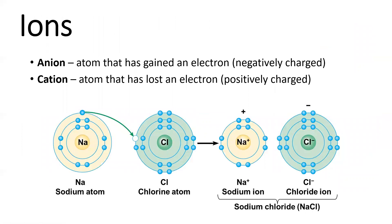Some definitions: when an atom gains an electron it becomes negatively charged, and we call that an anion. When an atom loses an electron it now has more protons than electrons and becomes positively charged — that is called a cation. Write those definitions down; you will definitely see those on the exam.